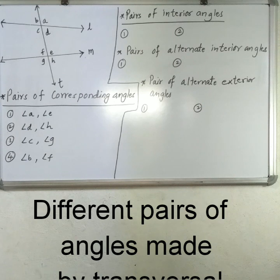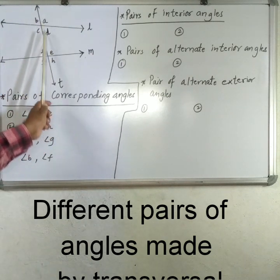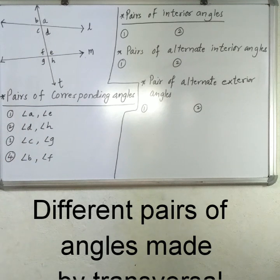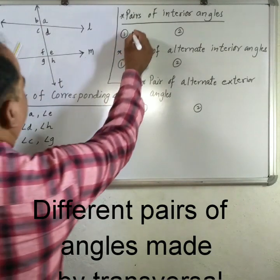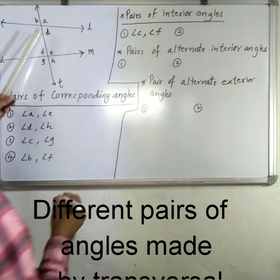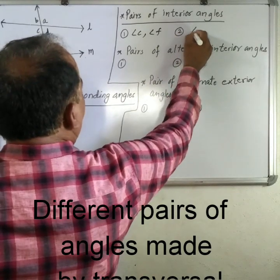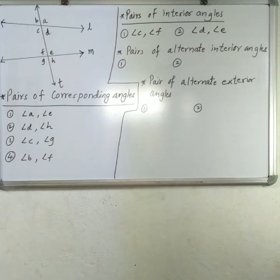Next are interior angles. The pairs of angles which are on the same side of the transversal and inside the two given lines are called interior angles. There are two pairs: angle C and angle F is the first pair, and angle D and angle E is the second pair of interior angles.